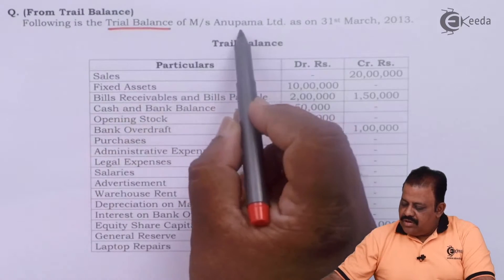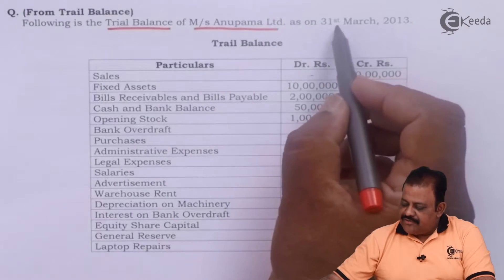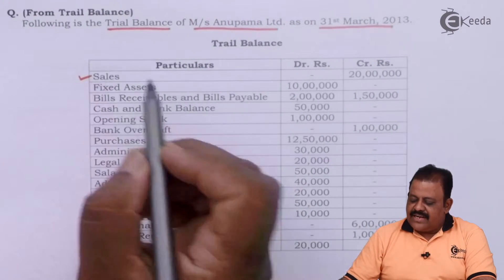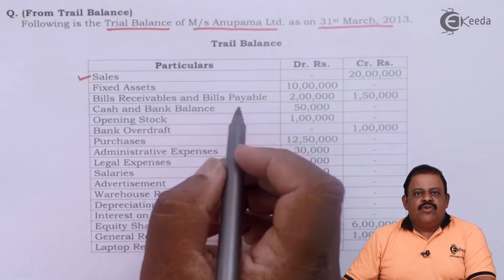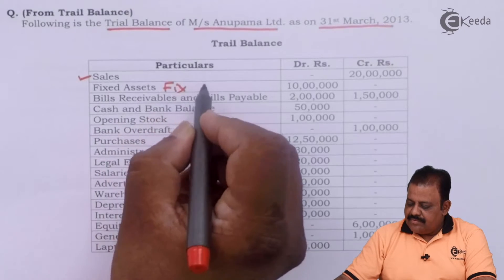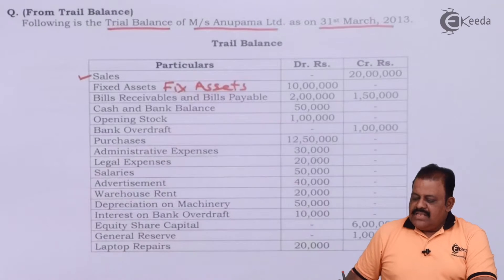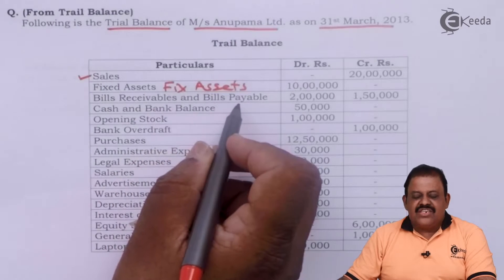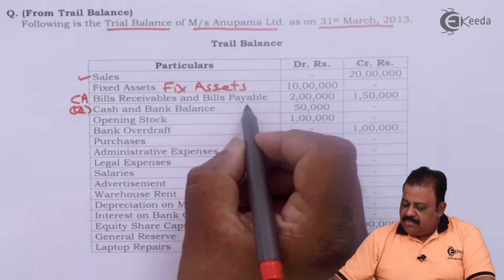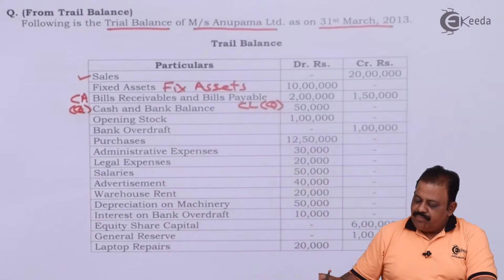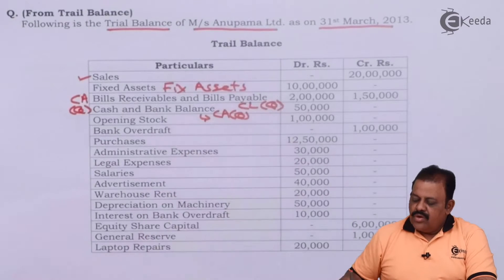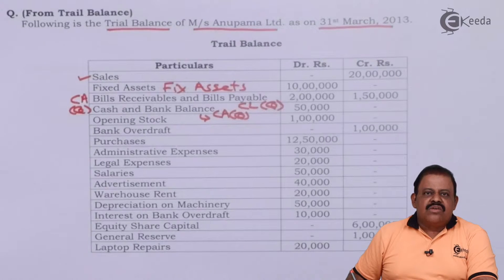Following is the trial balance of Messrs Anupama Limited as on 31st March 2013. Sales will be the first item of the income statement. Fixed assets will be the first item of balance sheet under application of funds. Bills receivable and bills payable: bills receivable is a current asset (quick), bills payable is a current liability (quick). Cash and bank balance is a current asset (quick).